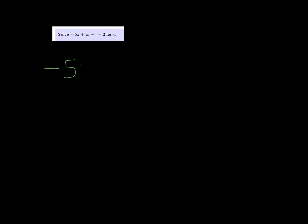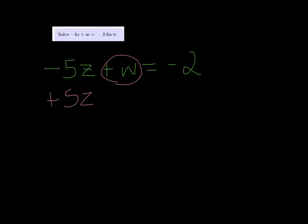All right, we're going to solve negative 5z plus w equals negative 2 for w. I just need to get this w by itself. Let's start by adding 5z to both sides.